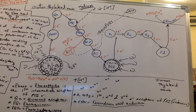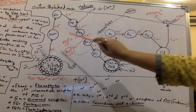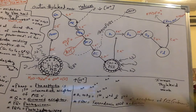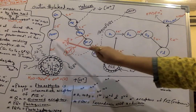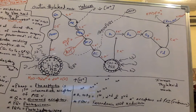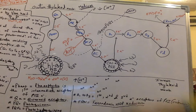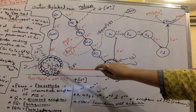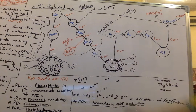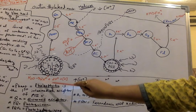The first intermediate electron acceptor of PS2 is Pheophytin — I have written the abbreviation 'Pheo' here. Pheophytin is the first intermediate electron acceptor of PS2, having a low electron potential as compared to the reaction center of PS2. So electrons from PS2 will move to Pheophytin, which is the first electron acceptor of PS2.